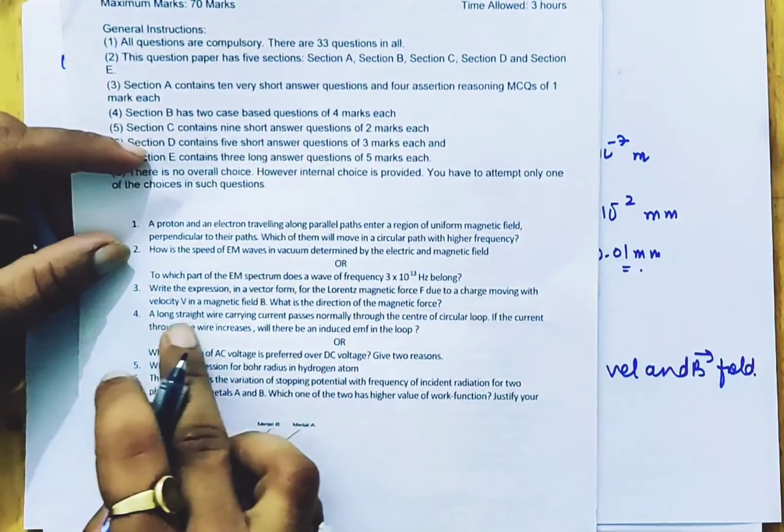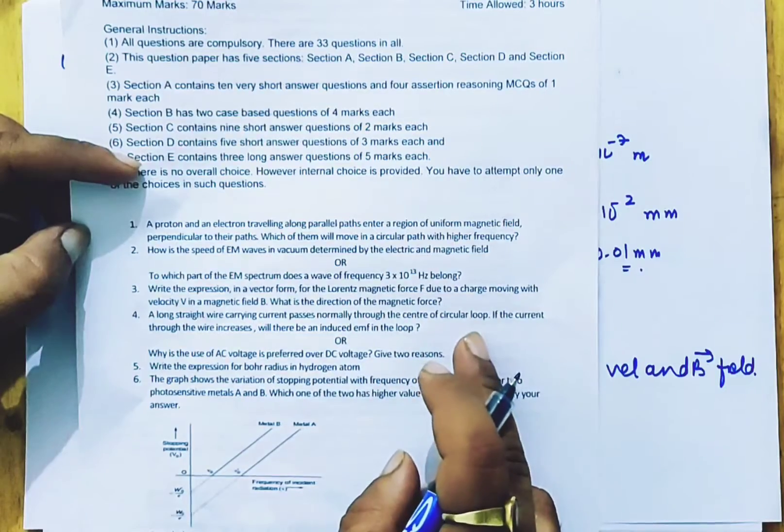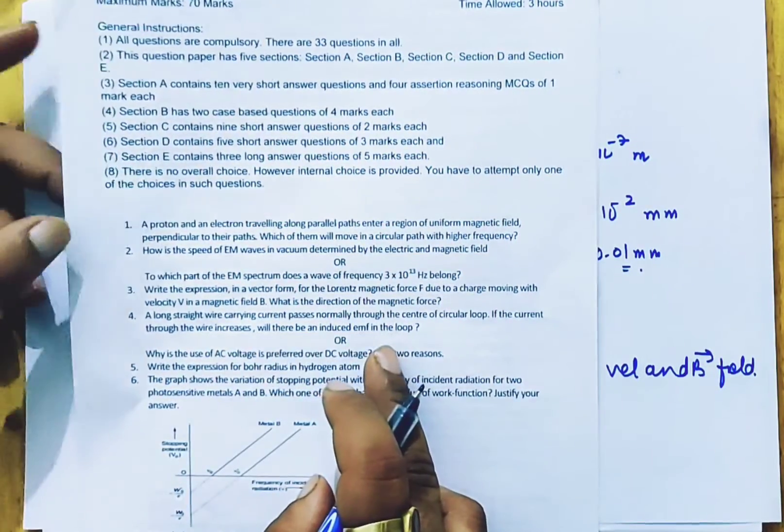Question number four. A long straight wire carrying current passes normally through the center of a loop. If the current through the wire increases, will there be an induced EMF in the loop?